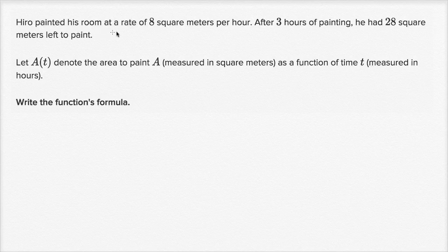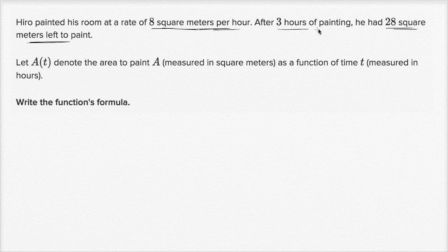Hero painted his room at a rate of eight square meters per hour. After three hours of painting, he had 28 square meters left to paint. They're talking in terms of how much we have left to paint, not how much we have painted.